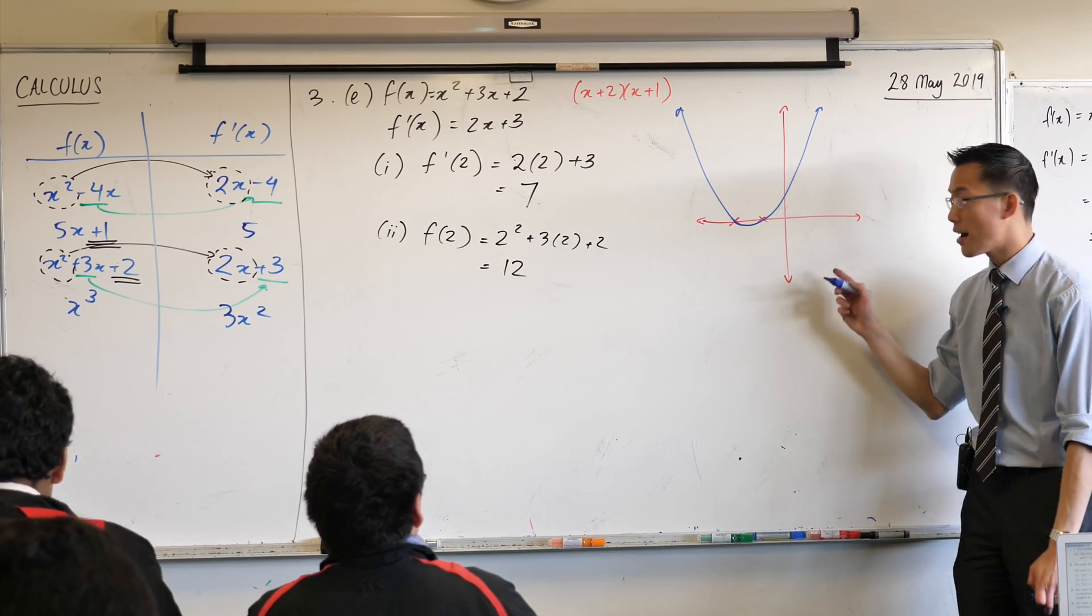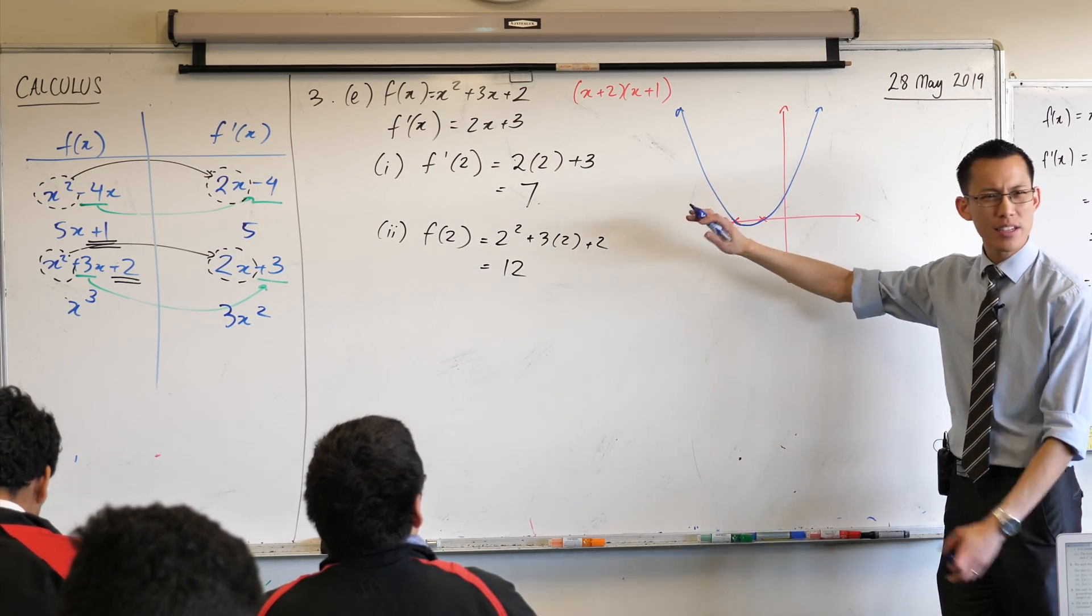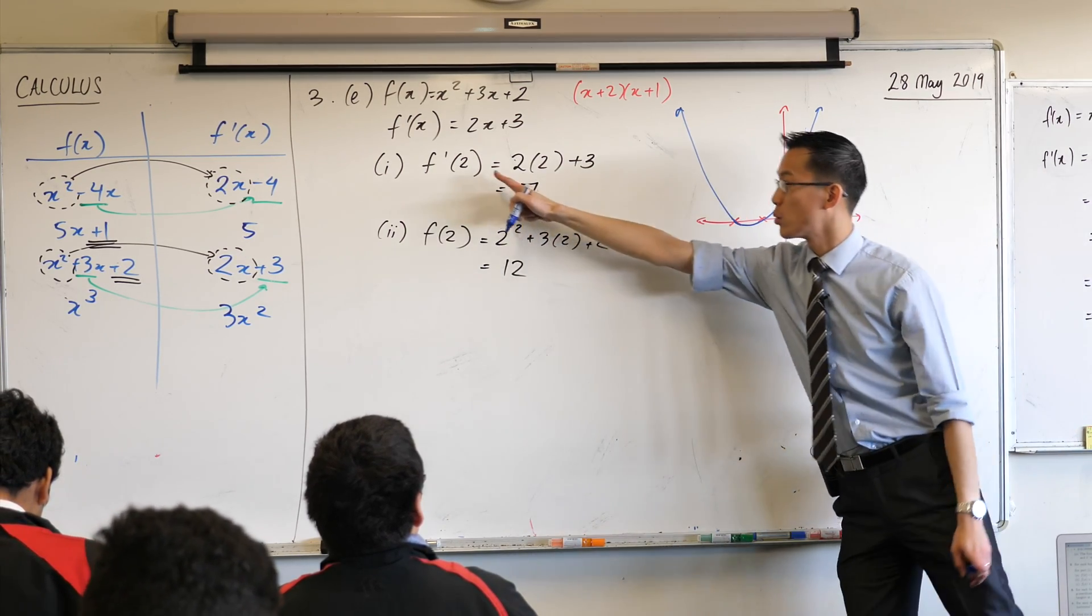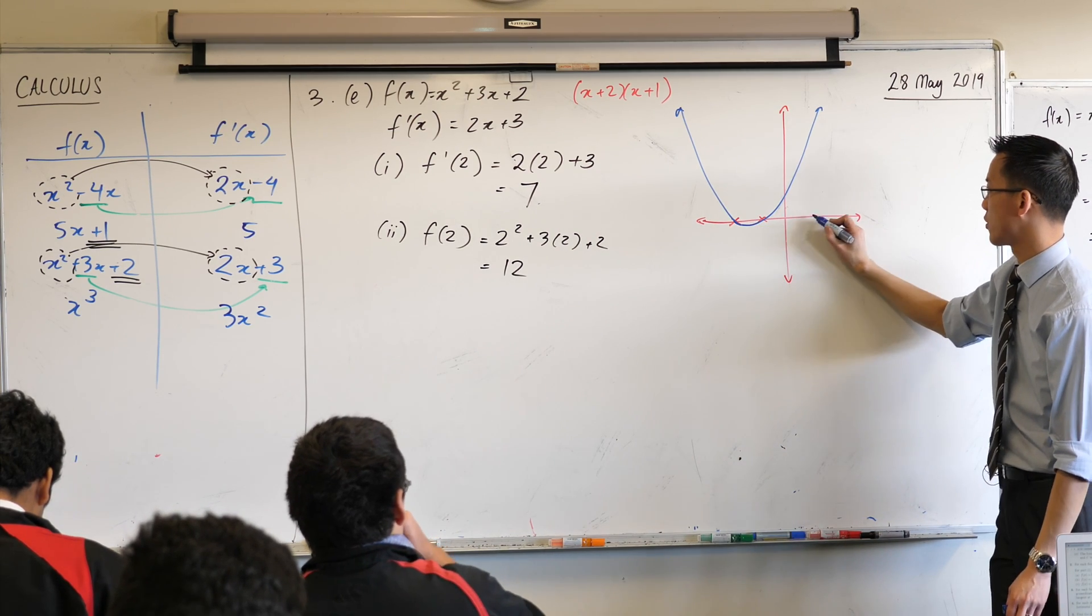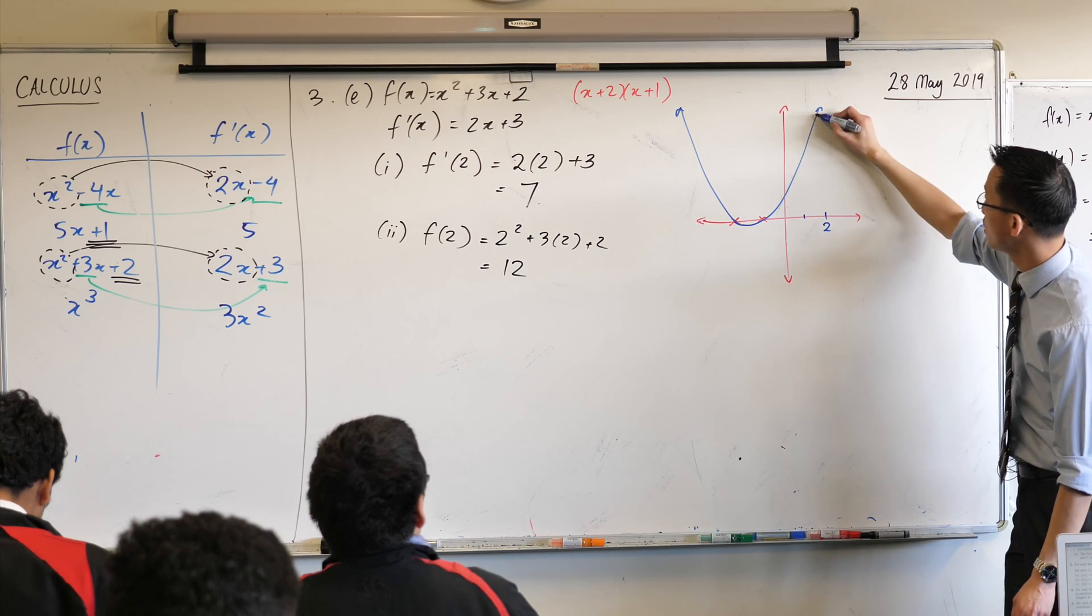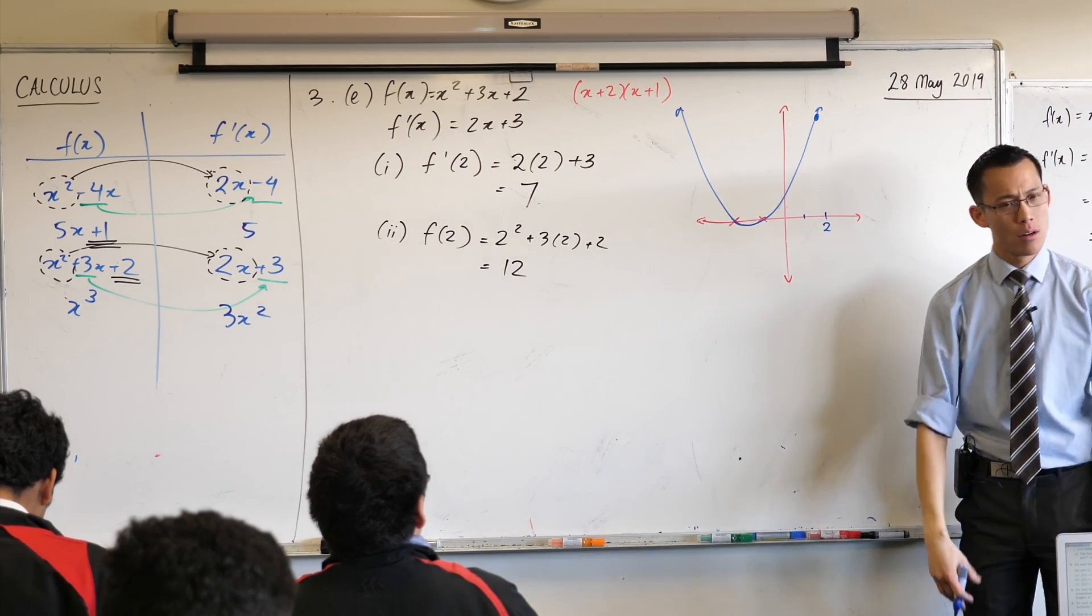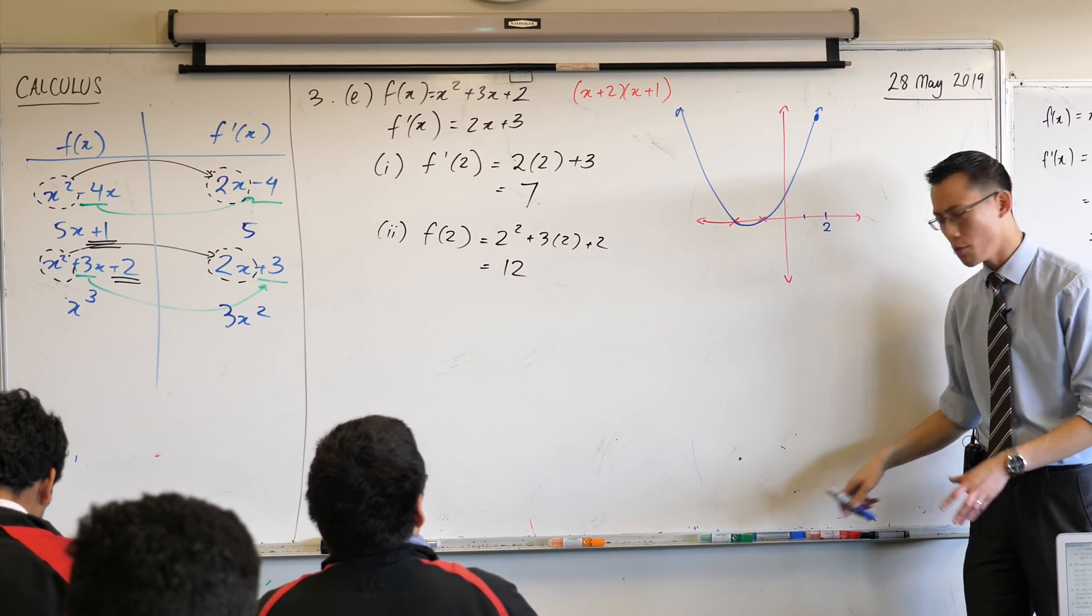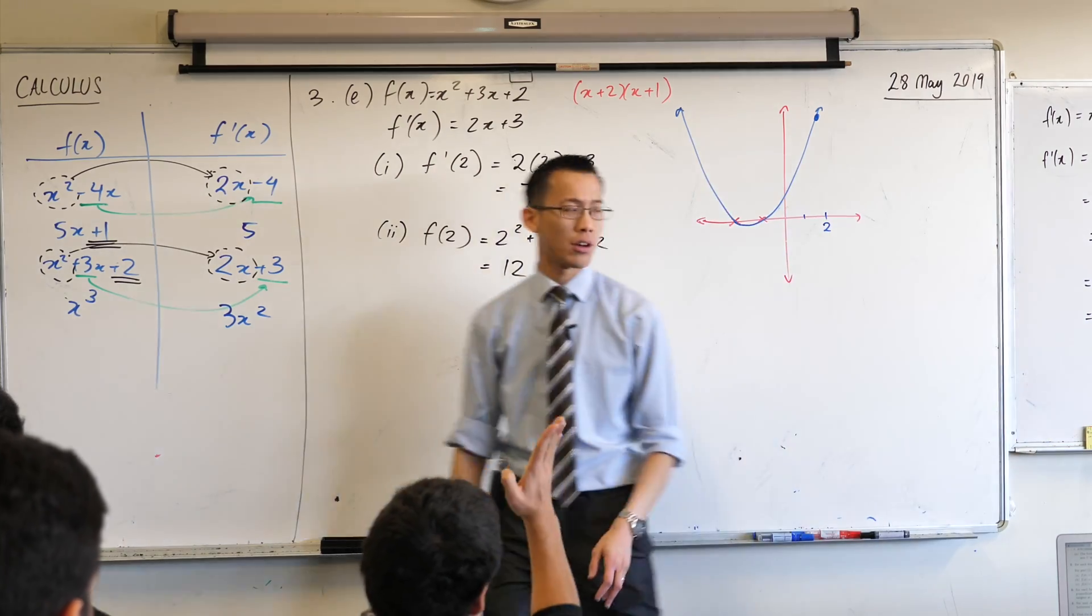Alright, so what they're asking for is, where is the tangent when x equals 2? That's why they're interested in this. So if that's negative 1 and negative 2, I'm placing 2 about there. There's x equals 2. So here I am on the graph. What would the tangent look like? Can you put your arm the way the tangent would go? Where would it go?